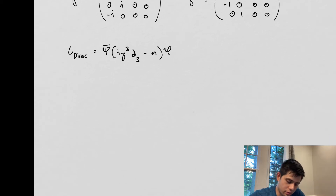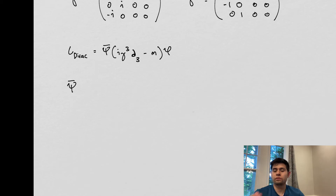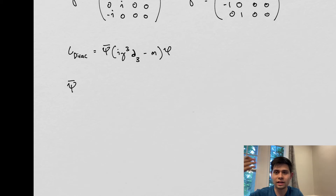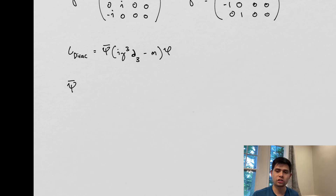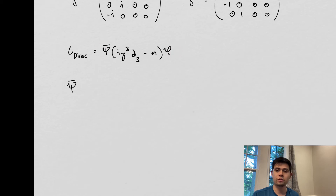It's important to know that I also have this object in the Lagrangian: this is the complex conjugate of the spinor. Just like we can have complex scalars — where there's an i in the exponent of e — these spinors can be complex conjugated. The complex conjugate of a spinor is what we denote by a bar on top of the spinor. So we have the spinor and then we have its complex conjugate.